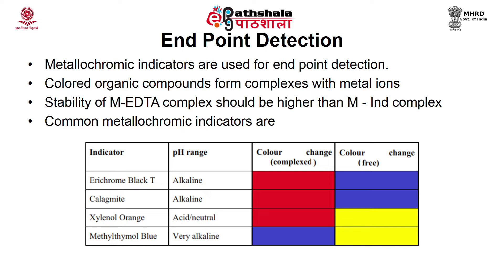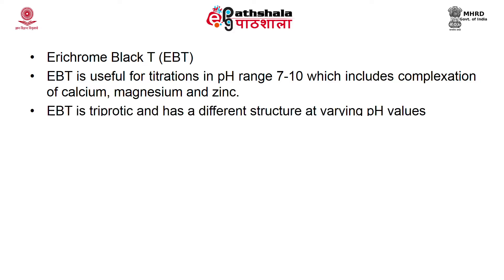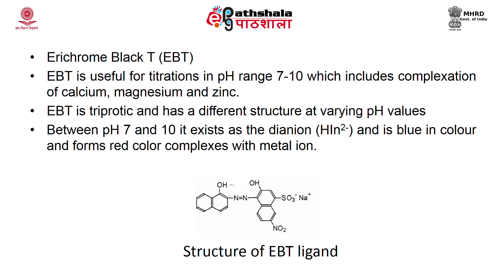Metallochromic indicators are used for end point detection. These are colored organic compounds that form complexes with metal ions. The stability of the metal-EDTA complex should be higher than the metal-indicator complex. Common metallochromic indicators are Eriochrome Black T (EBT), which is red in complex form and blue in free form, and xylenol orange, which is red in complex form and yellow in free form. EBT is generally used in the pH range 7 to 10, covering complexation of calcium, magnesium, and zinc. EBT is a triprotic ligand and between pH 7 and 10 it exists in di-anionic form, blue in color, and forms a red color complex with metal ions.